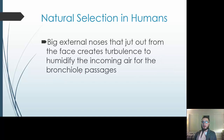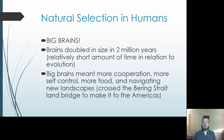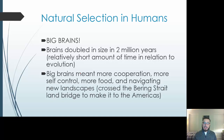We developed big external noses that jut out from the face, creating turbulence to humidify incoming air for our airways. Brains doubled in size in two million years — a relatively short time in evolutionary terms. Big brains meant more cooperation between each other, the ability to live together and cooperate towards a common goal, more self-control, more food, and navigating new landscapes. Ultimately, we crossed the Bering Strait Land Bridge to make it to the Americas.